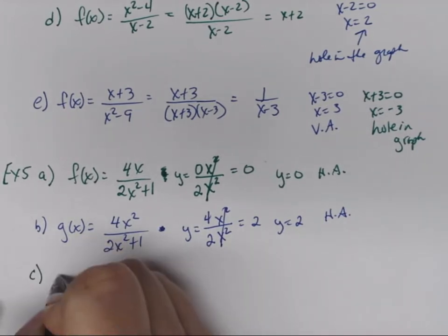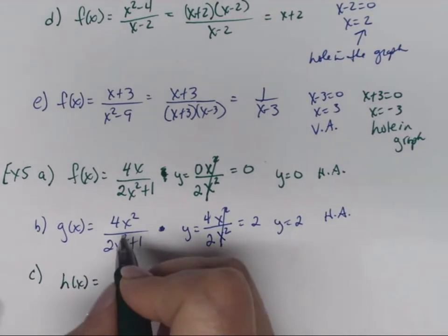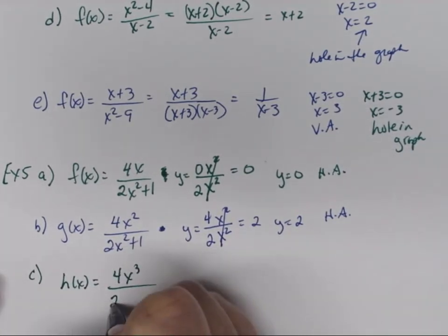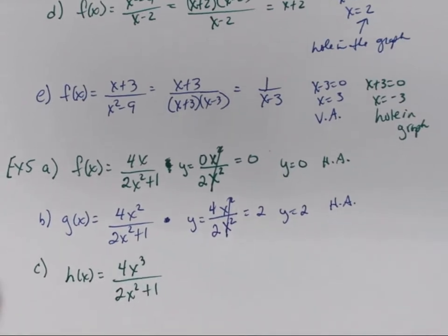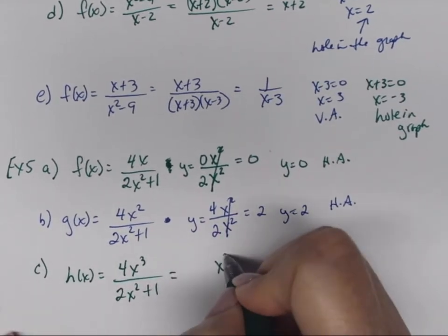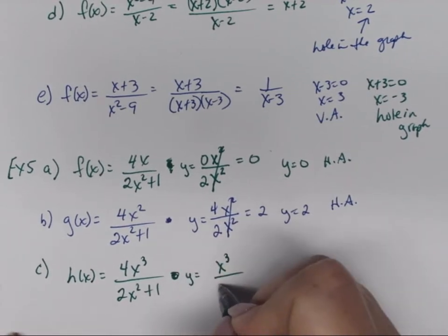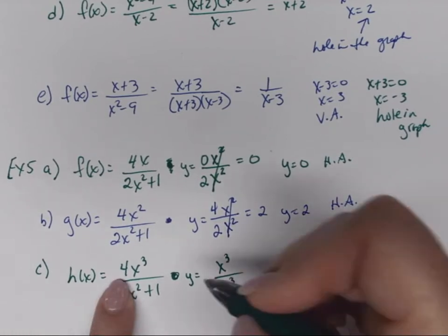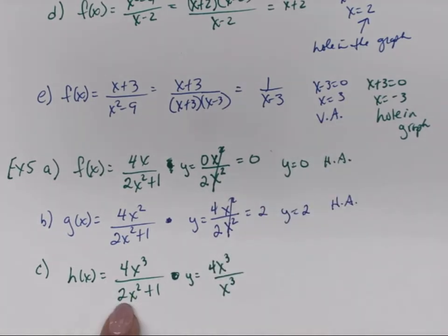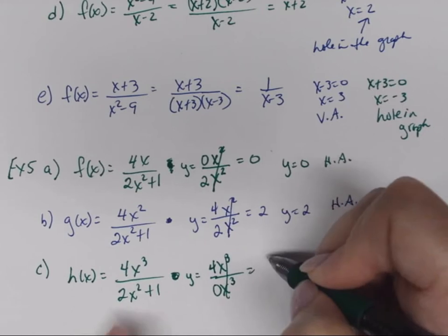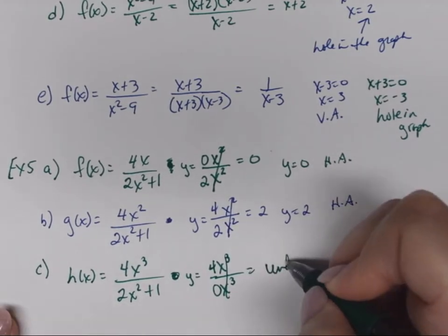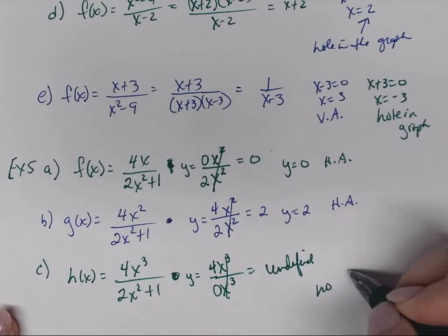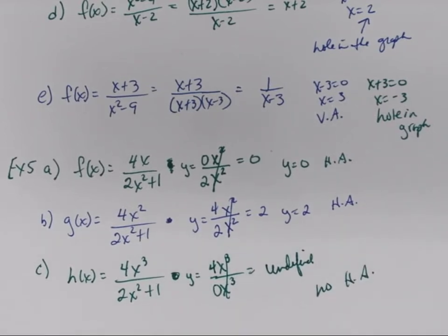Part C: h(x) = 4x³/(2x²+1). The highest degree is x³. How many x³'s in the numerator? Four. In the denominator? Zero. The x³'s cancel, but 4/0 is undefined. So there is no horizontal asymptote. That's all you have to do — match the degrees. Some people use 'bigger on top or bigger on bottom' — any method works as long as you show your work.